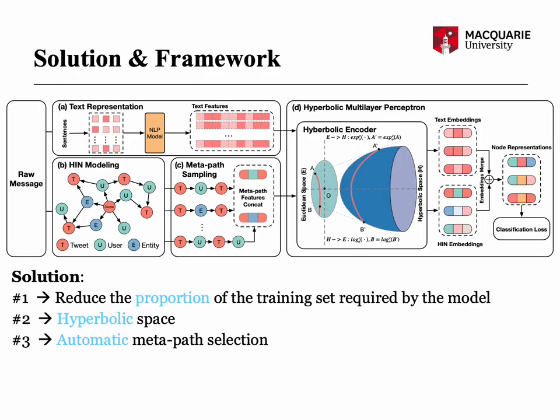The solution is we design a framework that contains a text model and a heterogeneous information network model to reduce the proportion of the training set required by the model. Therefore, we can reduce the need for labeled data. We use automatic metapath selections to capture heterogeneous information. Specifically, we only enumerate metapaths from the training set instead of the whole dataset, which greatly improves the efficiency of the framework.